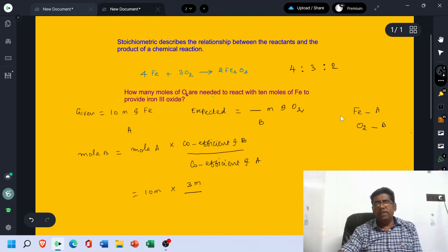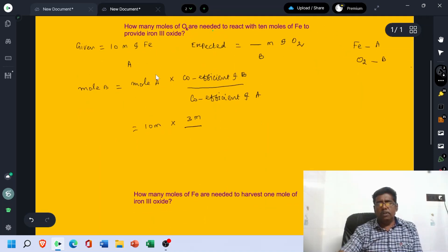Coefficient of A. Which one is A? Fe is A. In the equation, what is the Coefficient of Fe? 4 mol. Therefore, this is 4 mol.